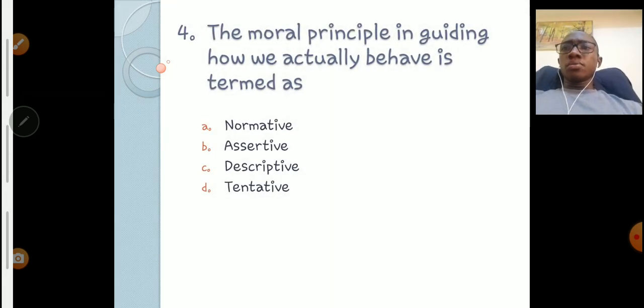Question number four: The moral principle in guiding how we actually behave is termed as what? Last time I think we established two behaviors in critical thinking - we talked about descriptive and normative. Which one talks about how people actually behave? Yes, you are right, the answer is descriptive. So that makes C the answer. Normative is about what we ought to do or ought to think, but what we actually do or think is the descriptive.